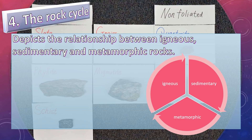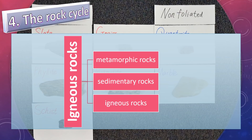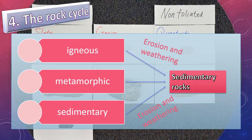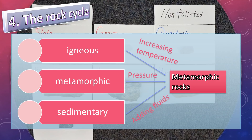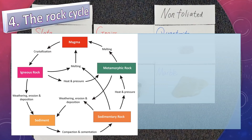The rock cycle depicts the relationship between igneous, sedimentary, and metamorphic rocks. Igneous rocks can metamorphose into metamorphic rocks, sedimentary rocks, or another igneous rock. Sedimentary rocks can form from the erosion and weathering of igneous, metamorphic, or other sedimentary rocks. Any rock with increasing temperature, pressure, or adding fluids can form a metamorphic rock. This diagram shows the rock cycle and how they transform into each other.